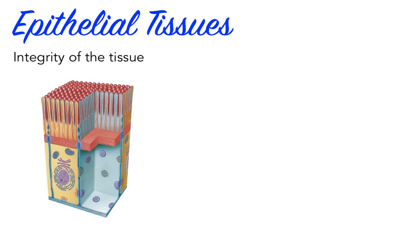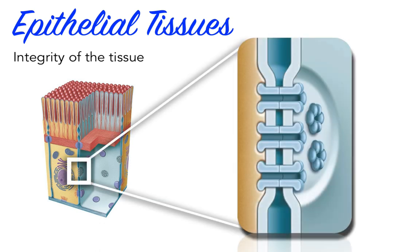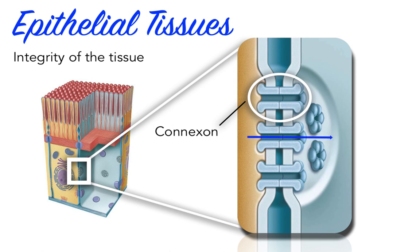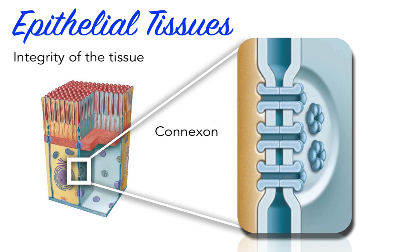Not only do cells of epithelial tissues need to hold onto one another for structural support, but they also need to communicate with one another, sharing important chemical resources and coordinating their internal activities. Some epithelial functions require rapid intercellular communication. At a gap junction, two cells are held together by embedded membrane proteins called connexons, made of clusters of a protein called connexin. Together, the connexons form a narrow passageway that lets small molecules and ions pass from the cytoplasm of one cell into the cytoplasm of the neighboring cell. Gap junctions are most abundant in cardiac and smooth muscle tissue, where they coordinate muscle contraction, and also interconnect cells in ciliated epithelia to help coordinate cilia movements.